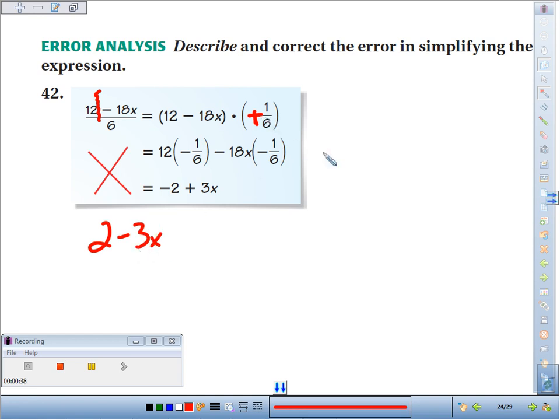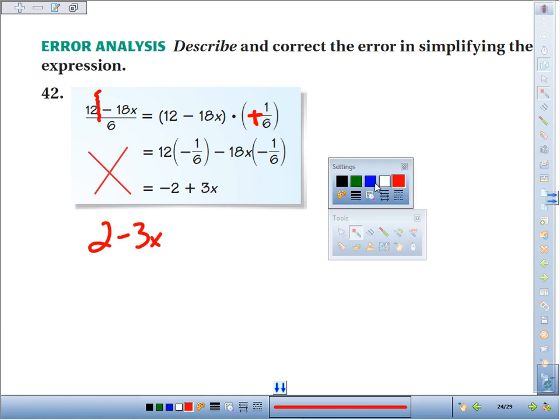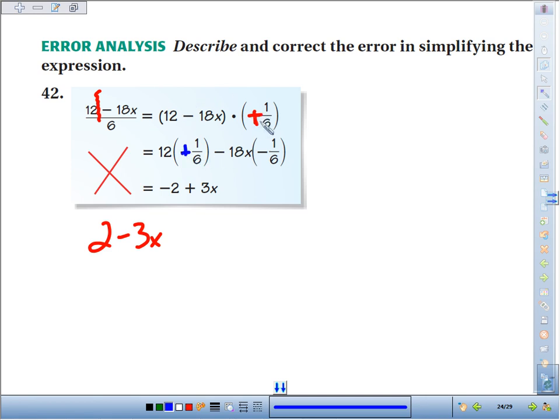Let's see if we were to change this to a positive if we get a different answer. So we give the positive 1/6 times 12 and positive 1/6 times negative 18x. Well, positive 1/6 times 12 is a positive 2, and that's what I got. Positive 1/6 times negative 18x. Negative 18 times a positive 1/6 is a negative 3x, and that's what I got as well.